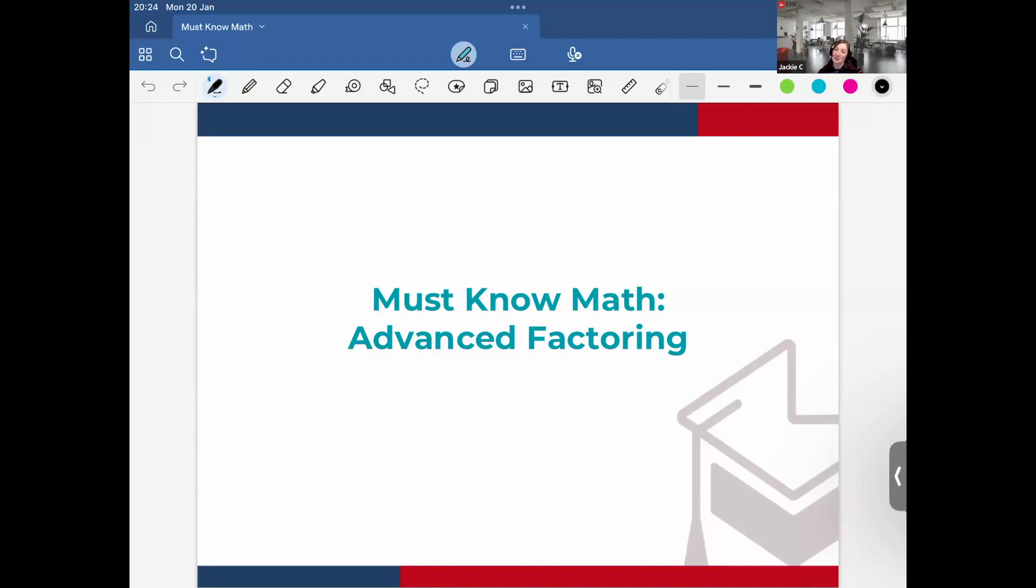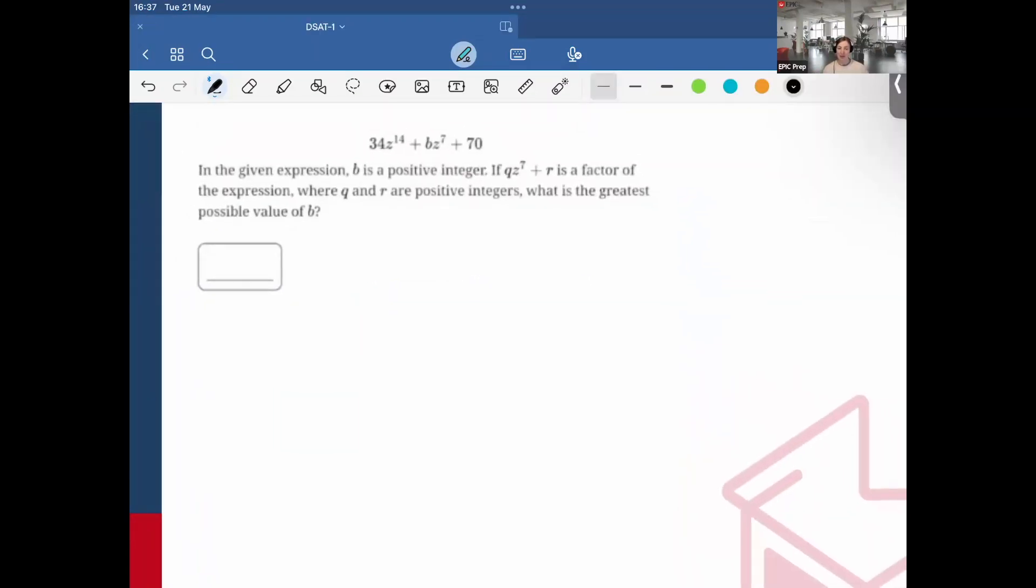So let's just jump in. Look at this problem. I heard that a very similar problem was on the May 2024 SAT. I think it was one of the most missed questions, so definitely a good question to know. The problem is: 34z^14 + bz^7 + 70. In the given expression, b is a positive integer, and qz^7 + r is a factor of the expression, where q and r are positive integers. What is the greatest possible value of b?